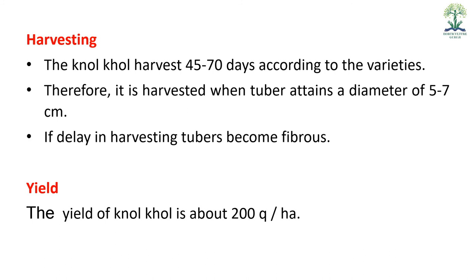Harvesting: नोलखोल 45-70 days में किस्मों के अनुसार तैयार होती है। जब knob का diameter 5-7 cm हो जाए तो काट लेना चाहिए। अगर field में ज़्यादा देर खड़ा रखा जाए तो यह fibrous (रेशेदार) हो जाता है, जो खाने लायक नहीं रहता। Yield: नोलखोल की उपज लगभग 200 quintal per hectare होती है।